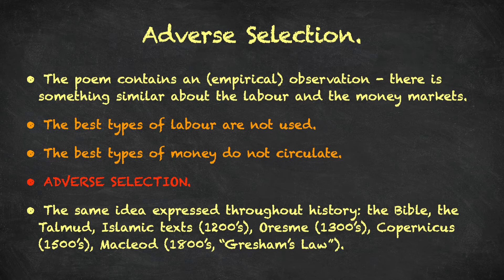Note that two and a half thousand years ago, we knew about this. The same idea has been expressed throughout history. It appears in the Bible, in the Talmud, in Islamic texts from the 13th century. Oresme said something similar in the 14th century and Copernicus in the 16th century. And MacLeod in the 19th century also commented on the same idea of adverse selection — he called the idea Gresham's Law.